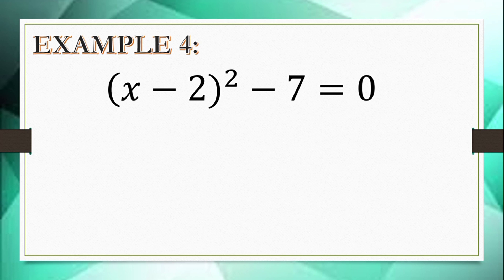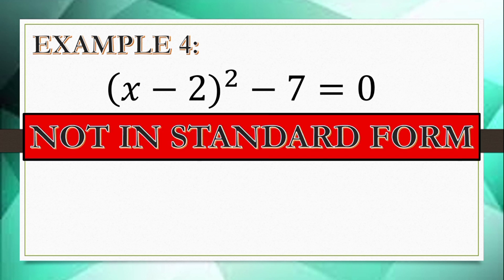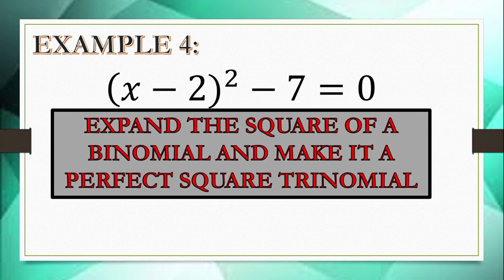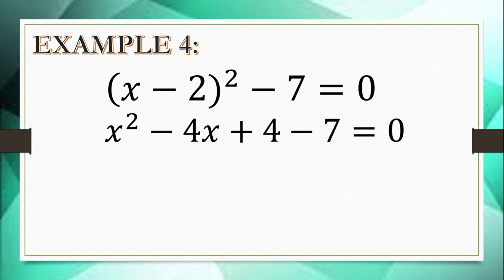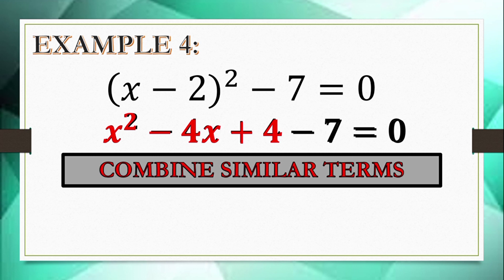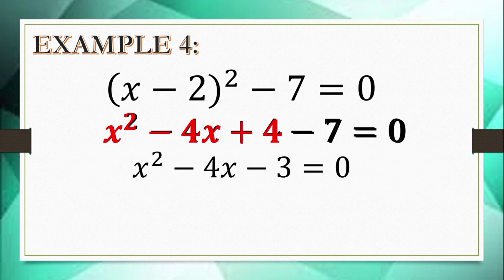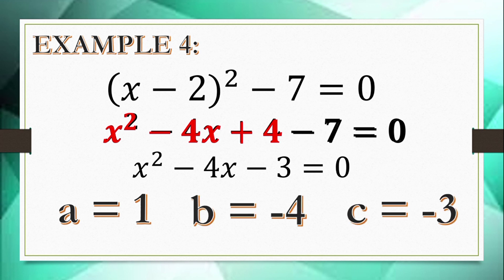Example number 4: the quantity (x minus 2)² minus 7 equals 0. This is not written in standard form. We expand the square of the binomial as a perfect square trinomial: x minus 2 squared equals x² minus 4x plus 4. Then copy minus 7 equals 0, and combine like terms: 4 and negative 7. The simplified standard form is x² minus 4x minus 3 equals 0, where a is 1, b is negative 4, and c is negative 3.